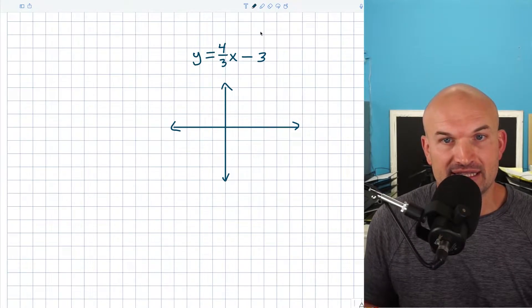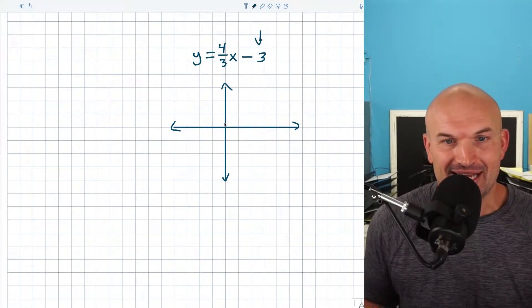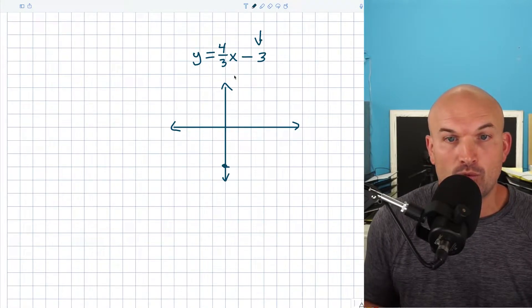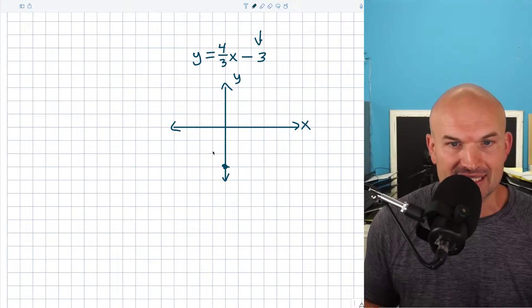So if you're going to graph this, remember, you always find the b, which is the y-intercept, negative three, and you're going to go down to negative three. So one, two, three. And again, we're doing this on the y-axis. This is the x-axis. So we go down to the y-axis, negative three.